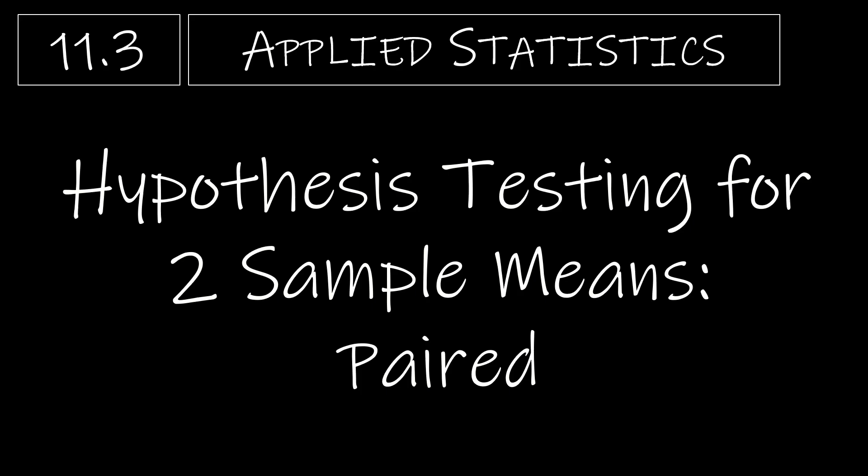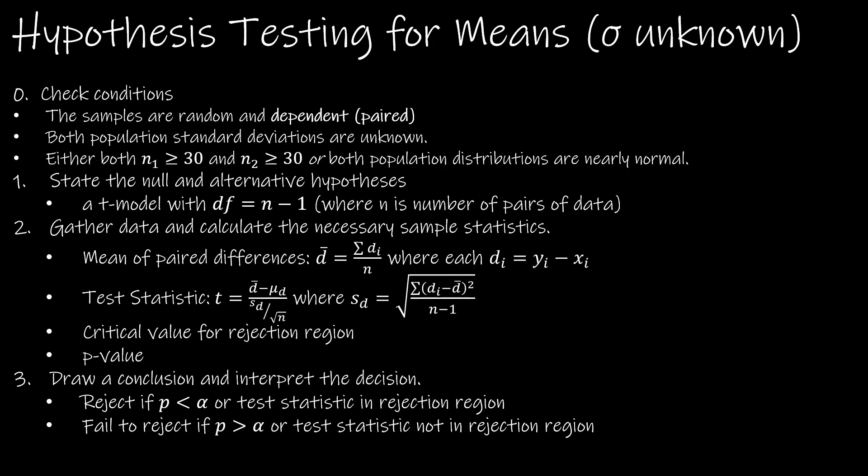Section 11.3 is all about hypothesis testing for two sample means when we have paired data. Here is your summary page that tells you everything you need to know. Those of you who like to do everything by hand — I'm not going to go through that in this video, because there is just so much to calculate that there are a billion places where you could make a mistake. It just makes so much more sense to use Excel.